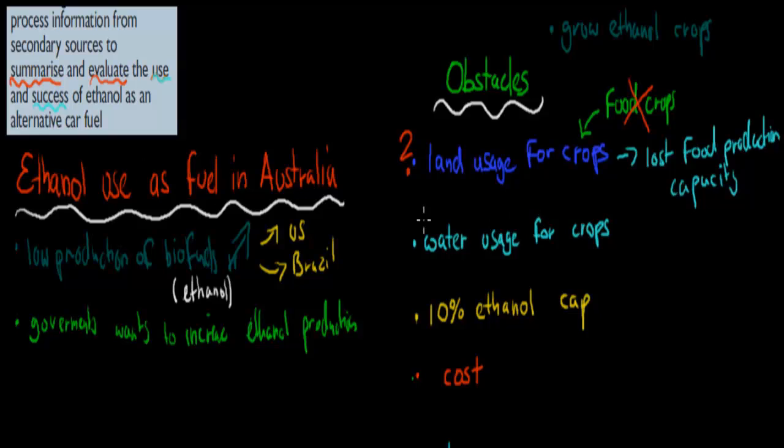Also water usage for crops because we have to grow these crops. We have to use water. And there's a drought, obviously we have drought in Australia. And Australia itself is a very dry continent. So overall we don't have that much water to spare. The question is can we afford to use water which we could otherwise use for other things to grow these crops? That's another obstacle we have to overcome before we can really increase our biofuel production.